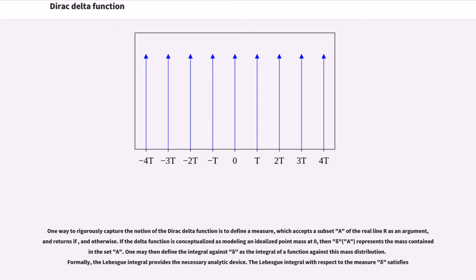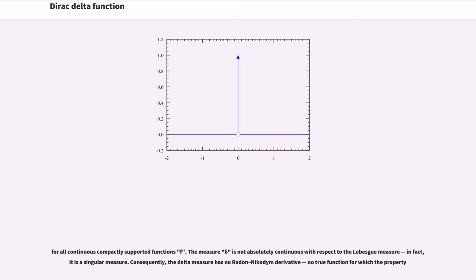One may then define the integral against delta as the integral of a function against this mass distribution. Formally, the Lebesgue integral provides the necessary analytic device. The Lebesgue integral with respect to the measure delta satisfies a sifting property for all continuous compactly supported functions f. The measure delta is not absolutely continuous with respect to the Lebesgue measure — in fact, it is a singular measure.